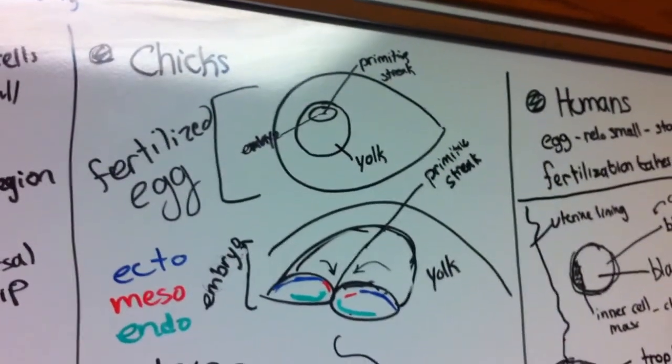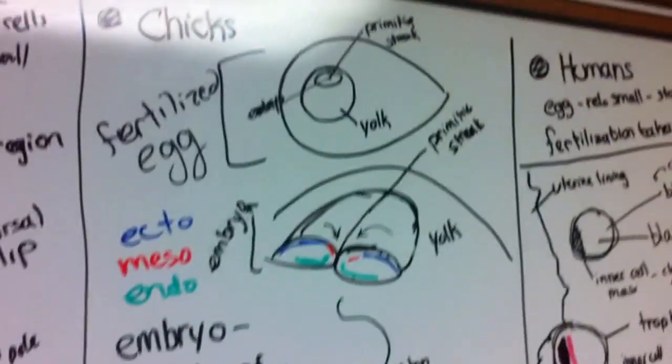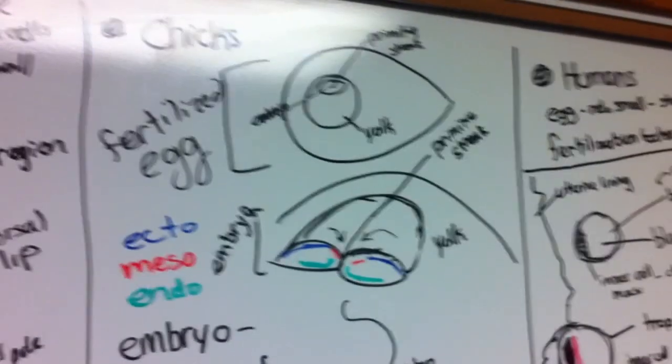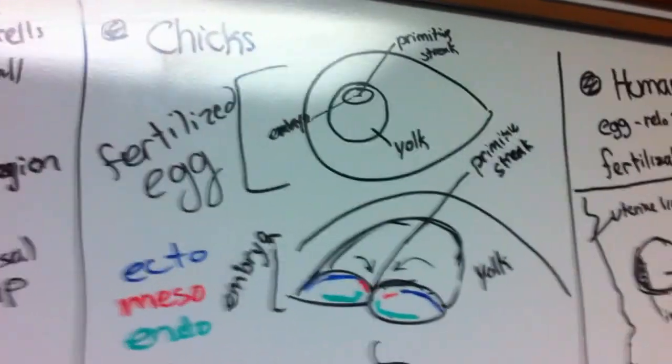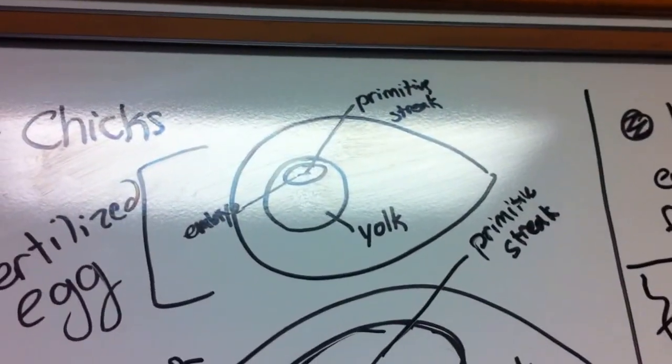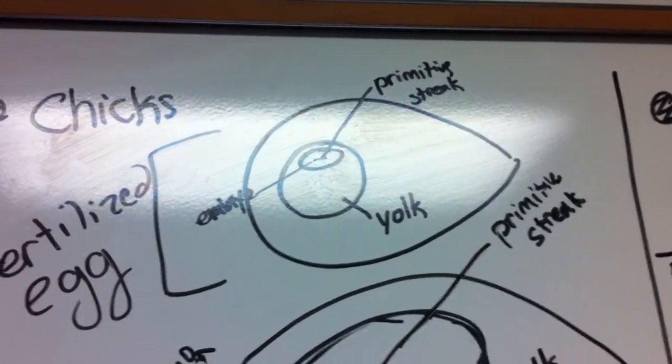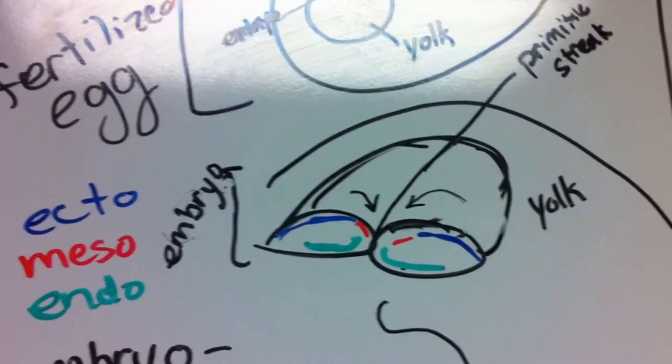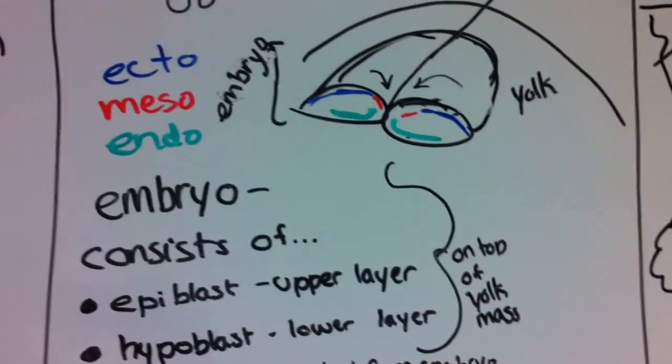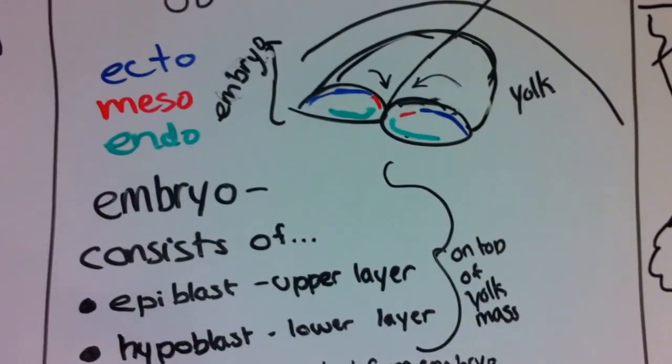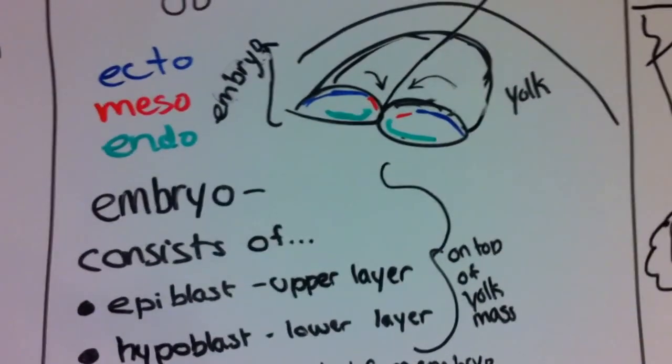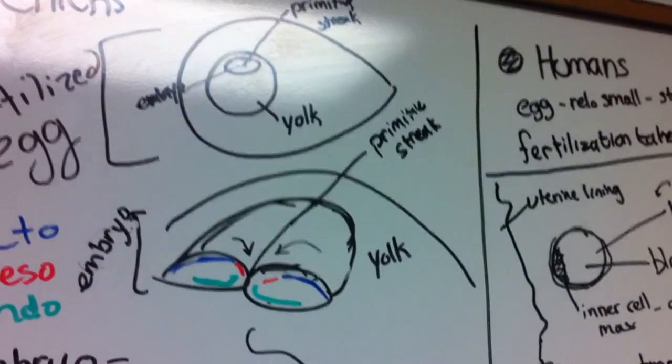In chicks, we have an embryo on a yolk on the fertilized egg. Here's the entire egg, and in the middle is the yolk, and on the yolk is the embryo in this little tongue-like shape. This embryo consists of an epiblast, which is the upper layer, and a hypoblast, which is the lower layer. The embryo sits on top of the yolk.